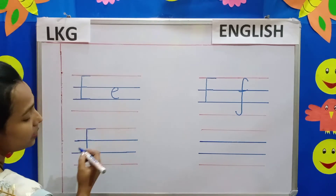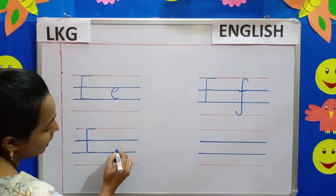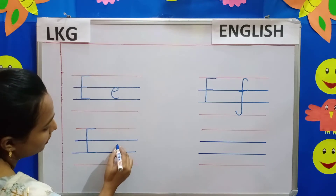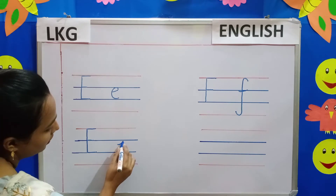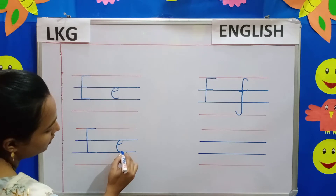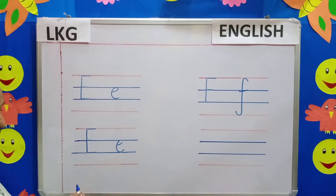Now we will write small letter E. You will start writing from the middle of these two lines. Place your pencil here in the middle, go up, touch this blue line, come down and touch the blue line and make a small curve. Now you have written small letter E.